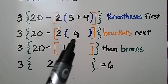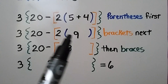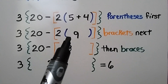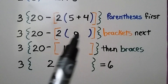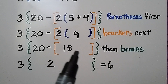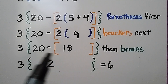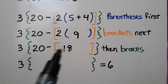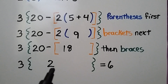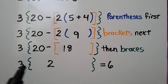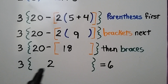Then we do within the brackets — these orange brackets — and 2 times 9 is 18. Now we do what's within the braces, and 20 minus 18 is 2. We have a 3 next to the grouping symbol, which means 3 times 2. That's equal to 6.